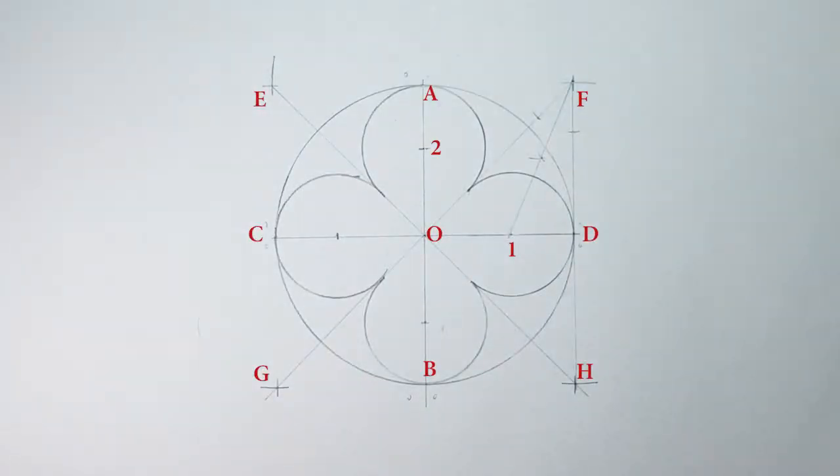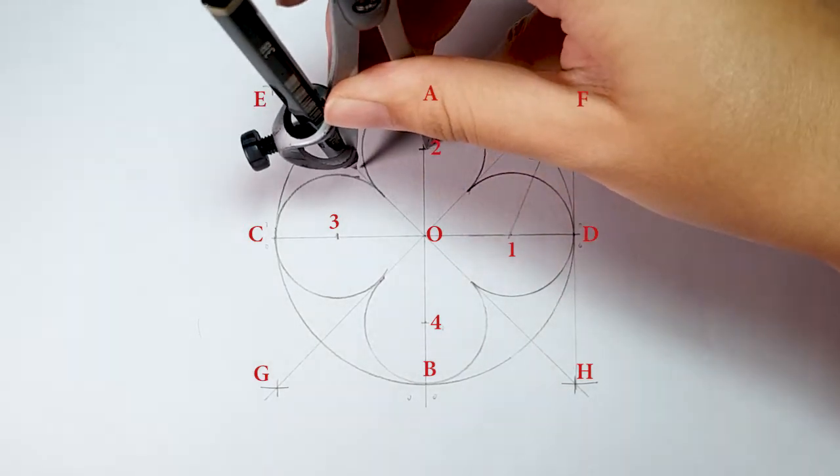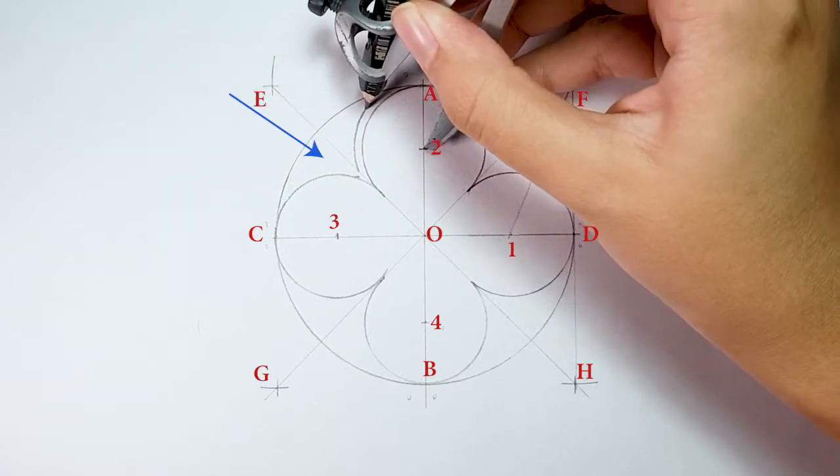Steps are repeated on line OC and line OB. Place your compass on point 2 and adjust slightly bigger than the radius length. Then, draw an arc within this area.